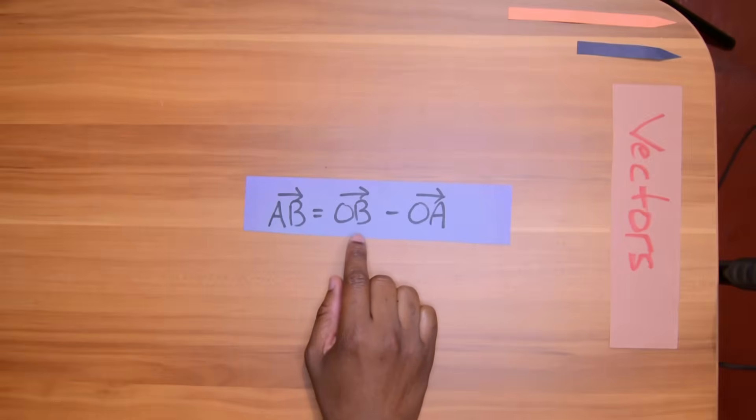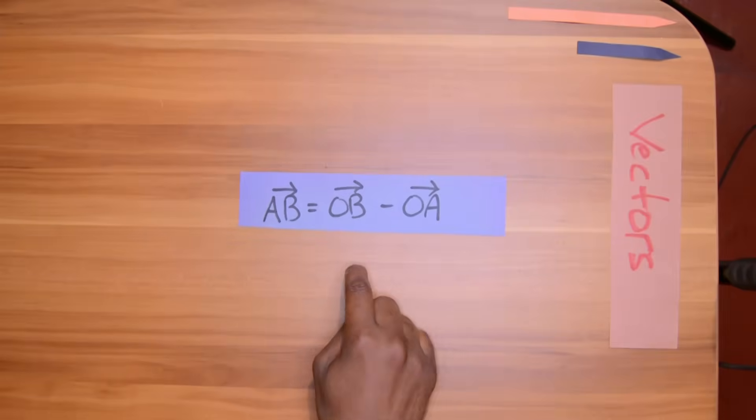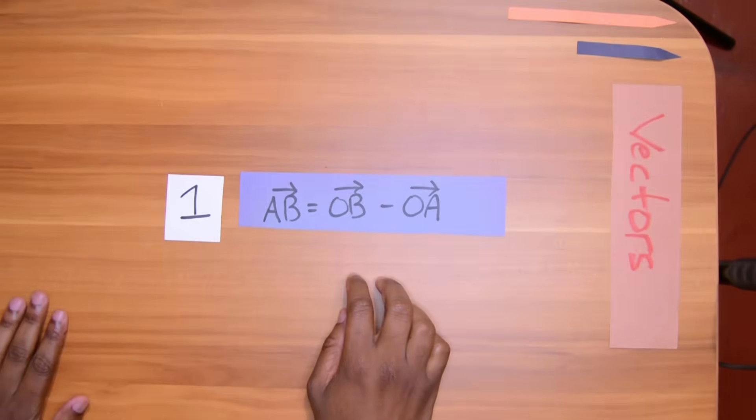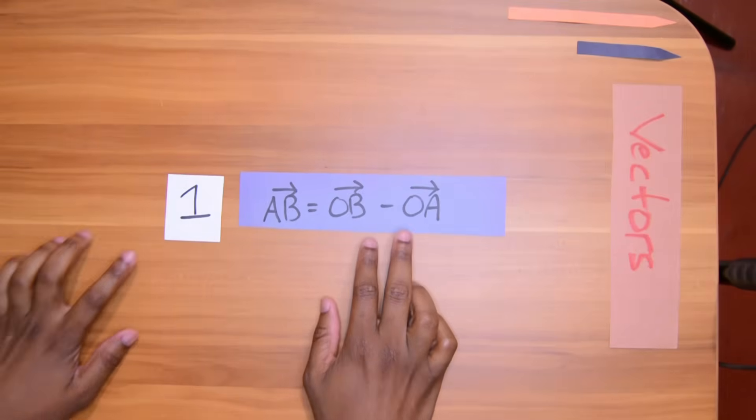AB is equal to OB take away OA. This is the most important number one formula for vectors that you would meet.